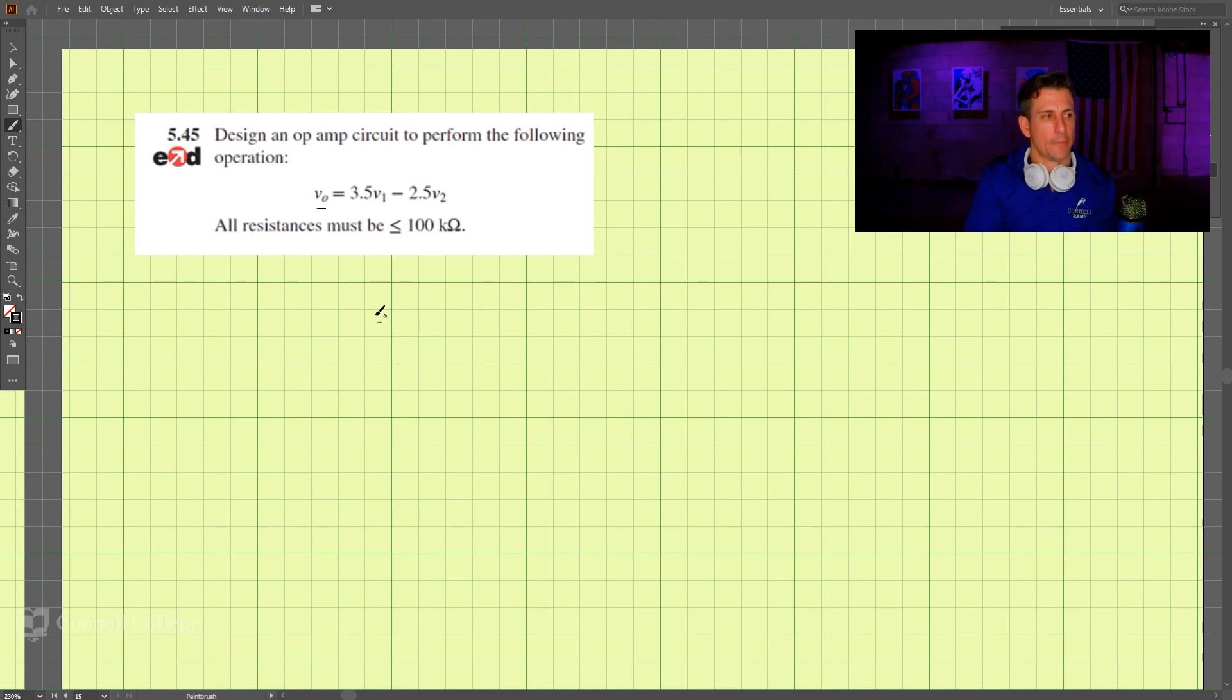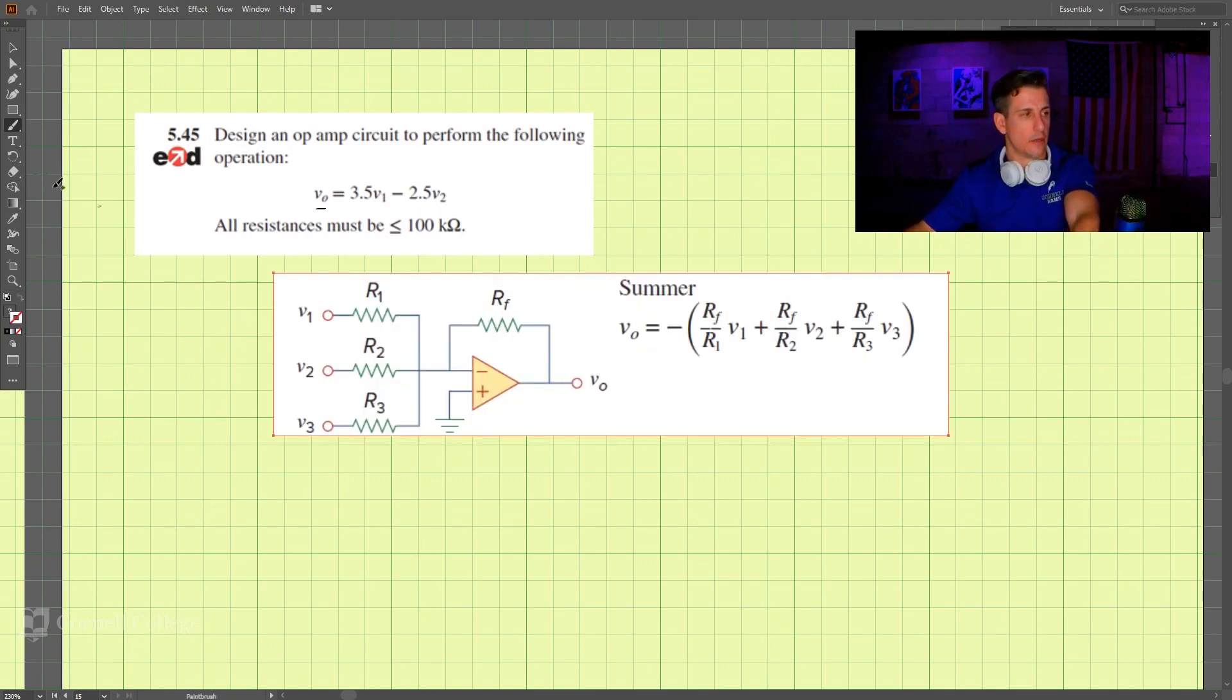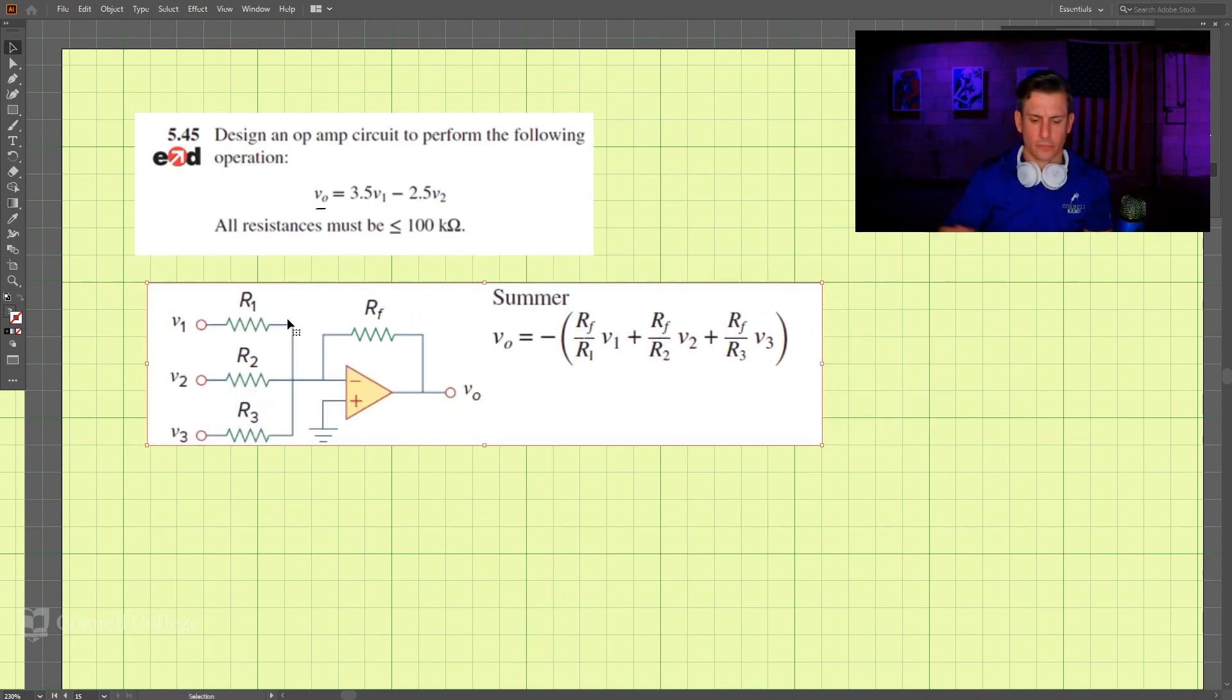Let's start. I think the easiest way to perform this operation is by using a summing amplifier. So you remember the summing amplifier here, and what we have in this case is we do not have v3 or r3, so this is not part of the equation that we're looking at.